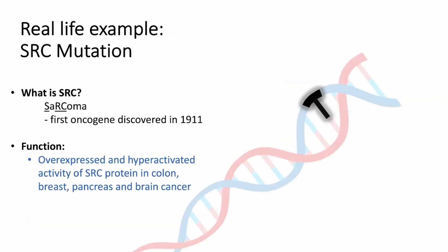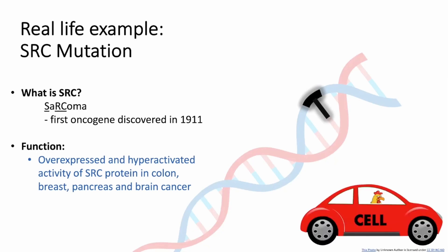One example of an oncogene is SRC, which stands for sarcoma. It is actually the first oncogene that was discovered in 1911 by studying chickens. It can be mutated and is overexpressed or hyperactivated in various cancers. I like to think of it as the driver that transforms into a hyperactive chicken and drives the cell out of control.